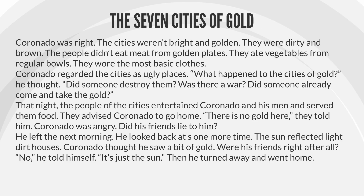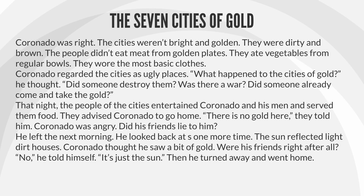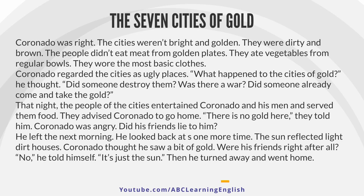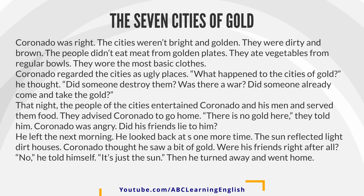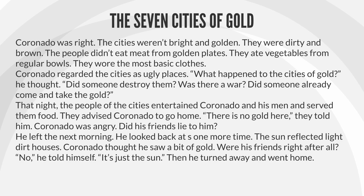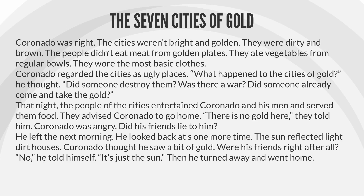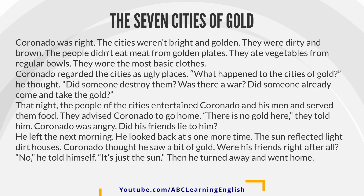Coronado was right. The cities weren't bright and golden. They were dirty and brown. The people didn't eat meat from golden plates. They ate vegetables from regular bowls. They wore the most basic clothes. Coronado regarded the cities as ugly places. What happened to the Cities of Gold, he thought. Did someone destroy them? Was there a war? Did someone already come and take the gold?